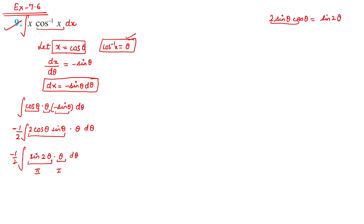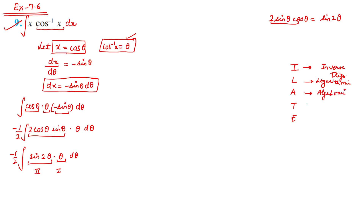I forgot to discuss the ILATE rule in the last video. ILATE stands for: I = Inverse trigonometric, L = Logarithmic, A = Algebraic, T = Trigonometric, E = Exponential. We take the function higher in this order as the first function. So for x·cosx we take x (algebraic) as first; for inverse or logarithmic functions we always take them first.